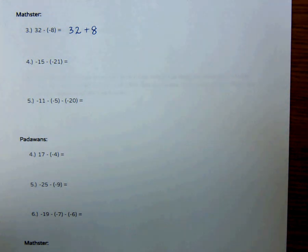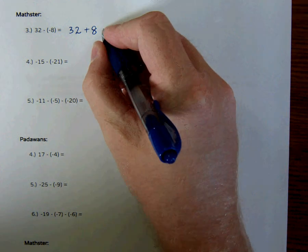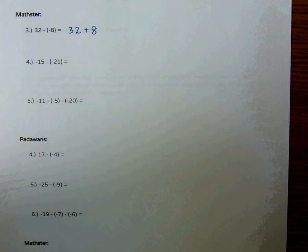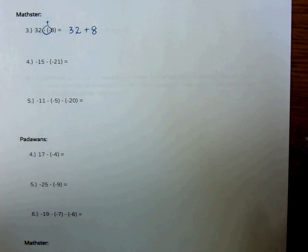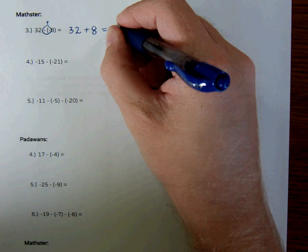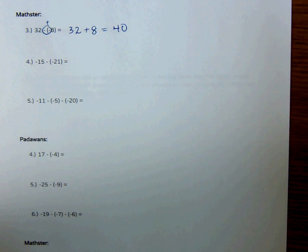32 minus a negative 8 is the same thing as 32 plus 8. A negative of a negative makes a positive, so this right here just becomes a positive. So 32 plus 8, I can do that, that's equal to 40, and there's no big deal.